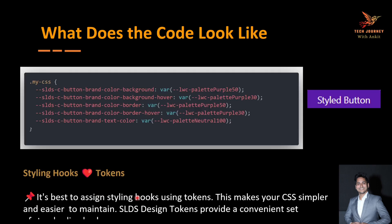How do we apply the styling? Whenever we have to use a style hook we need to create an external CSS file. In that external CSS file we write down the CSS class that we have to override, and here we pass the value into it.